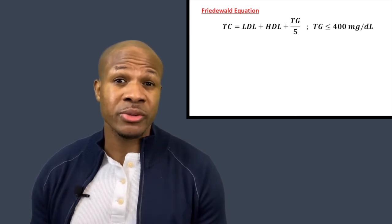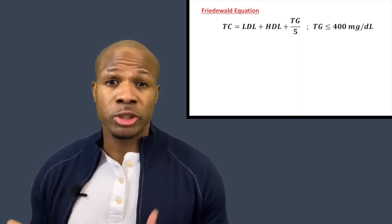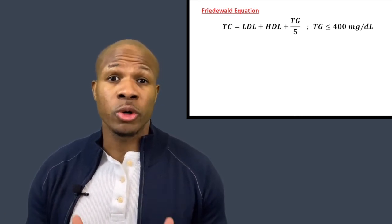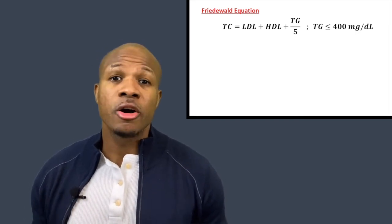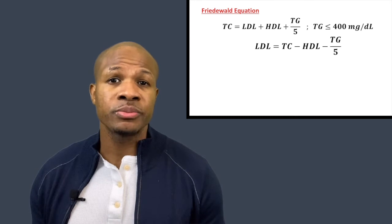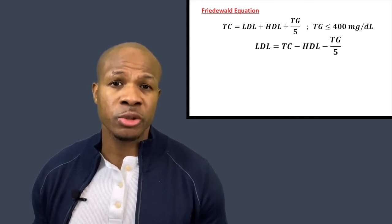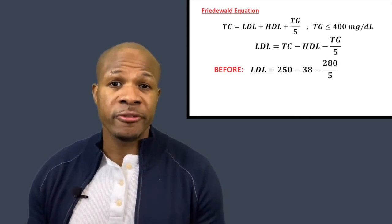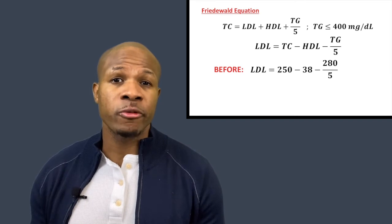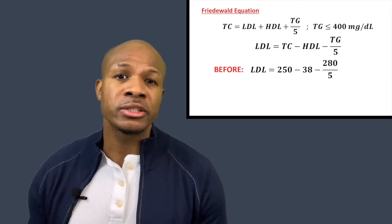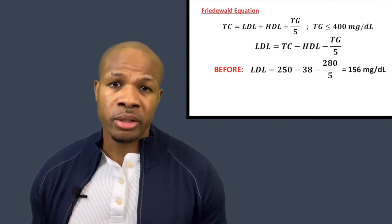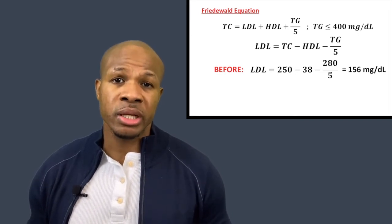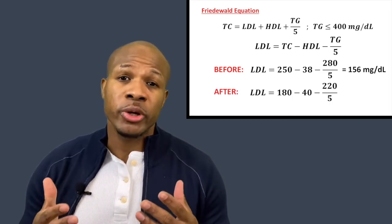The Friedewald equation states: Total Cholesterol = HDL + LDL + (Triglycerides ÷ 5). This equation is valid as long as the total triglyceride level is less than or equal to 400. For this patient, triglycerides were below 400, so we're free to use it. Solving for LDL: LDL = Total Cholesterol − HDL − (Triglycerides ÷ 5). Plugging in the initial values — 250 minus 38 minus 280 divided by 5 — gives us 156 mg/dL.